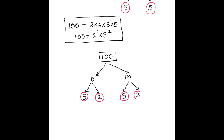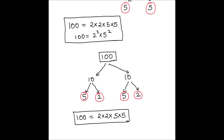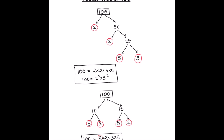Now we see that 5 and 2 are both prime numbers, so we circle these numbers. The lower level consists of all prime numbers which cannot be further divided. This completes the second factor tree, and the prime factors of 100 are again 2 × 2 × 5 × 5 — confirming we can make more than one factor tree for the same number.